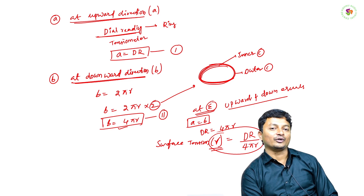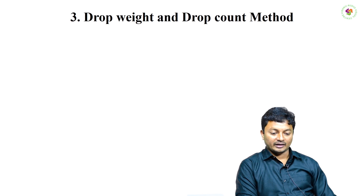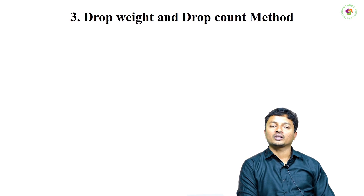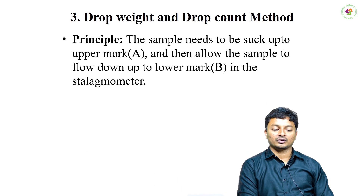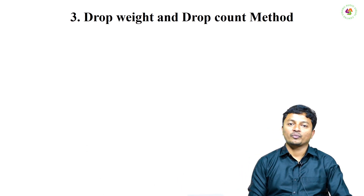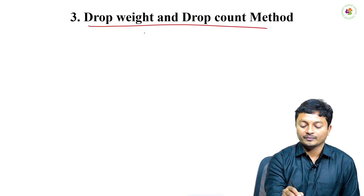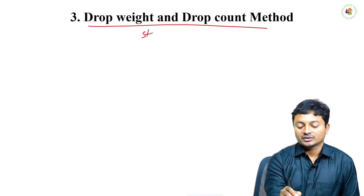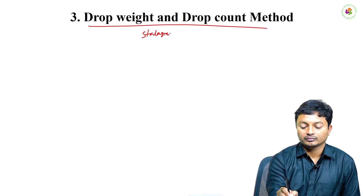Finally, the surface tension of the sample, γ, can be calculated by the formula: γ = d·r / (4πr). This is about the Du Noüy ring method. The next method is the drop weight and drop count method, also known as the stalagmometer method.